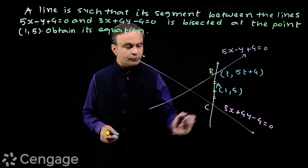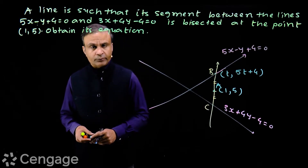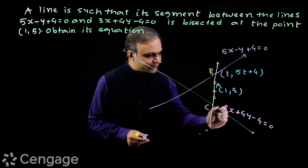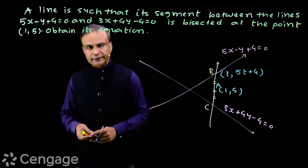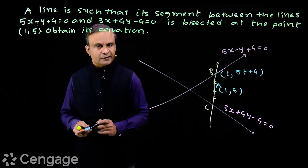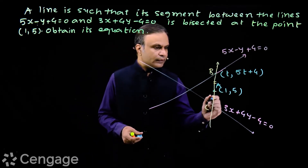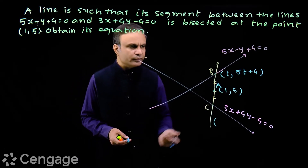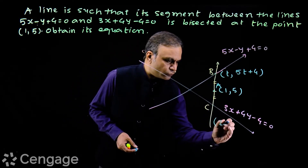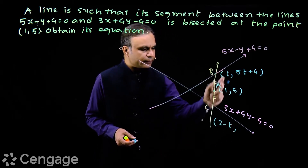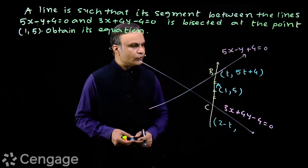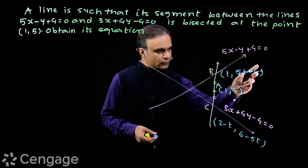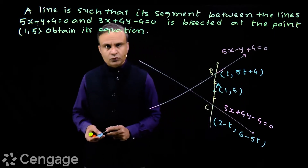We can find the coordinates of point C in terms of variable t, since point C lies on the other straight line. Now, since A is the midpoint of BC, the x-coordinate of C will be 2 minus t, so that (t plus 2 minus t) upon 2 equals 1. And the y-coordinate of C will be 6 minus 5t, so that (5t plus 4 plus 6 minus 5t) upon 2 equals 5.